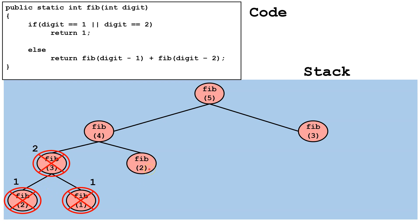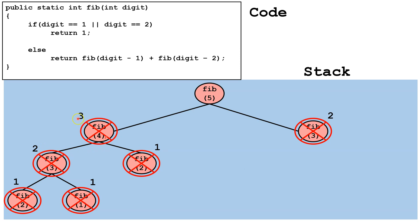Now we can look at Fib(2) — we already know it returns 1. We also know Fib(3) always returns 2, so we don't have to create the extra branches on that end of the tree; we simply write in 2. Next, we add 2 plus 1, which is 3, so Fib(4) will return 3. Then to calculate Fib(5), we add 3 plus 2 — that's what Fib(4) plus Fib(3) returned — and we learn that Fib(5) will return 5, because 5 is the fifth digit in the Fibonacci sequence.